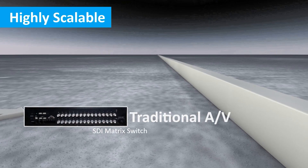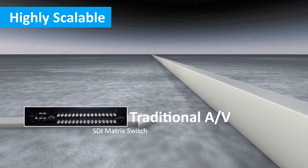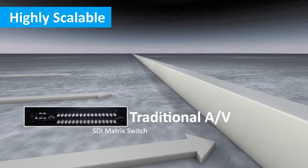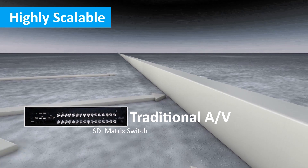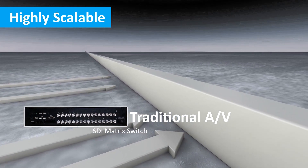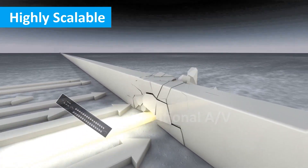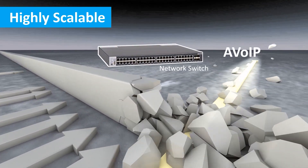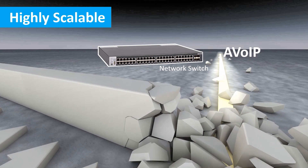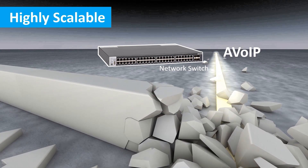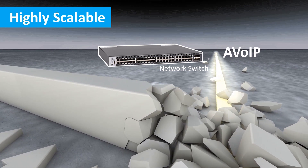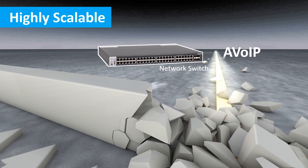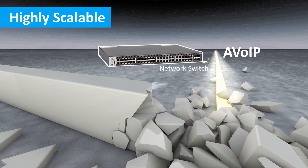In traditional AV, the number of sources and displays is limited by a fixed quantity of inputs and outputs of a matrix switch. However, an AV over IP switch is no longer limited to the ratio of inputs and outputs, and it's easier to keep adding sources and displays without overwhelming efforts.